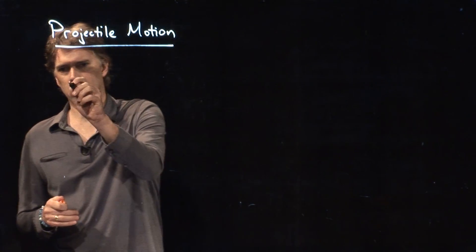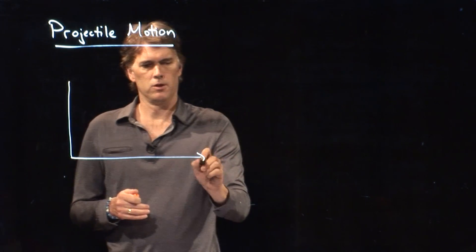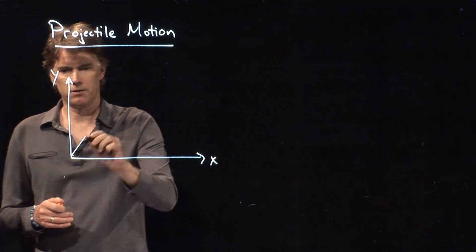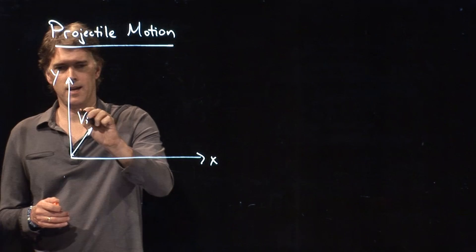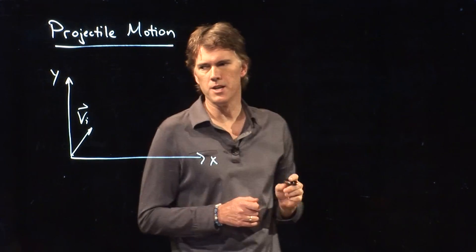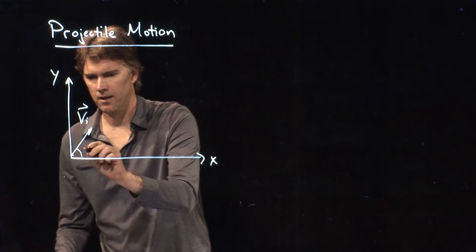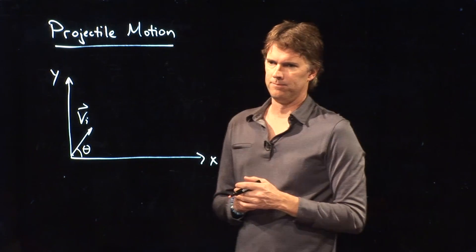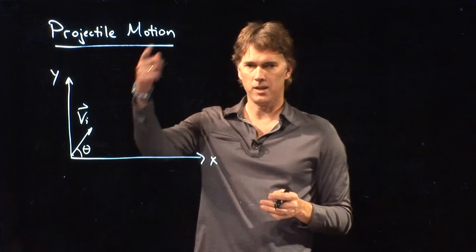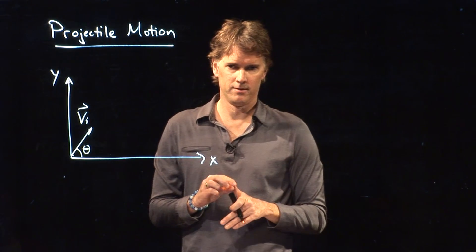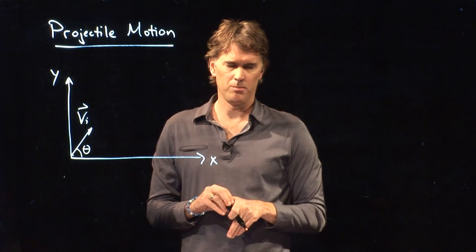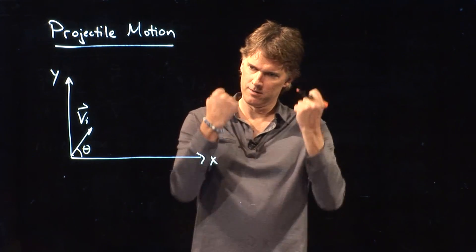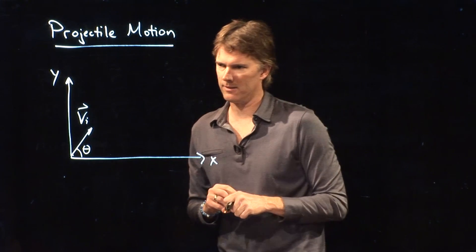Projectile motion looks like this. If I draw an xy coordinate system and I launch an object at some initial velocity and some initial angle theta, what happens to that object? What does it do? Does it keep going up forever? No, because there's this giant thing underneath us called the earth that tends to pull everything down.